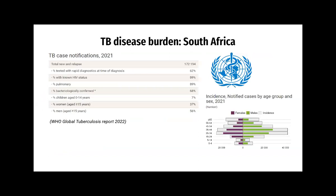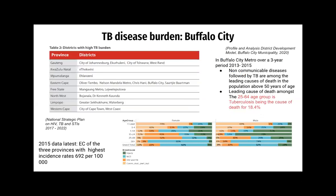In South Africa, of total new and relapse cases, only 62% were tested with rapid diagnostics at diagnosis. Only 89% were known with HIV status. 89% of cases were pulmonary TB and only 68% were bacteriologically confirmed. There was a higher predominance in men greater than 15 years old compared to women, especially in the 35 to 44 year old age group. In terms of Buffalo City, the Eastern Cape is one of the three provinces with the highest incidence rate, and unfortunately Buffalo City falls under one of the districts with the highest TB burden. A study over a three-year period from 2013 to 2015 found that non-communicable diseases followed by TB were among the leading causes of death in the population over 50, and the leading cause of death in the 25 to 64 year old age group.